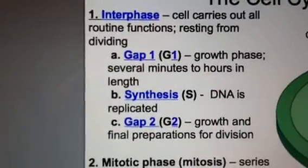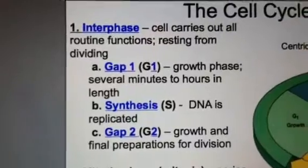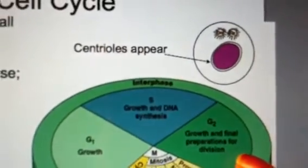And the third sub-phase is G2, also known as gap 2, which is growth and final preparations for division. And here you can see that right here, the last phase, G2, on our pie chart.